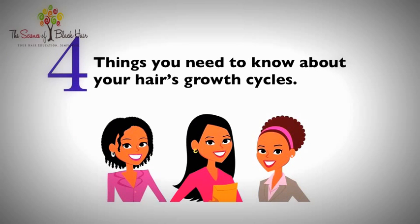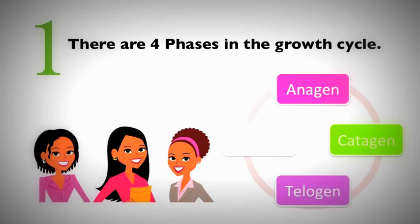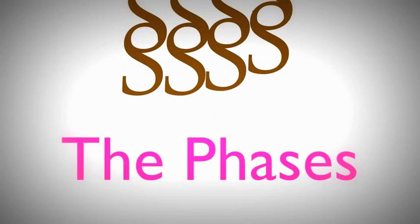There are four things you really need to know about hair growth and hair growth cycles. Number one: there are four phases in the hair growth cycle — anagen, catagen, telogen, and exogen. Let's look at these phases a little bit more closely.